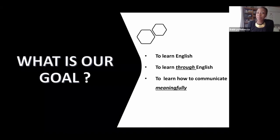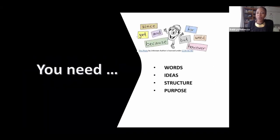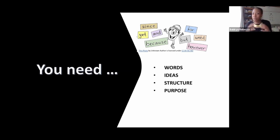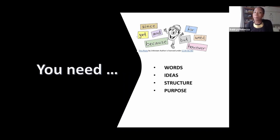The other goal is to learn how to communicate meaningfully, to be able to communicate with each other, with the world meaningfully. So if we want to communicate meaningfully, what do we need? We need words, we need ideas. You want to communicate ideas through words. We put those words and ideas in structure, in some grammatical structure, so that it's understandable, but we also need purpose. We need all four of these — words, ideas, structure, and purpose — in order to communicate meaningfully.